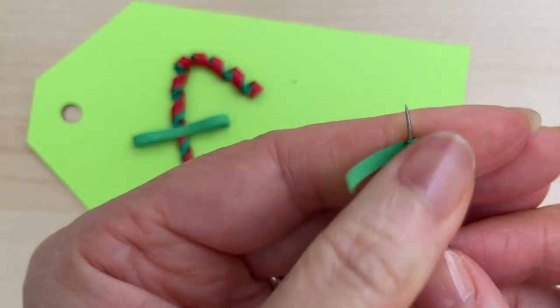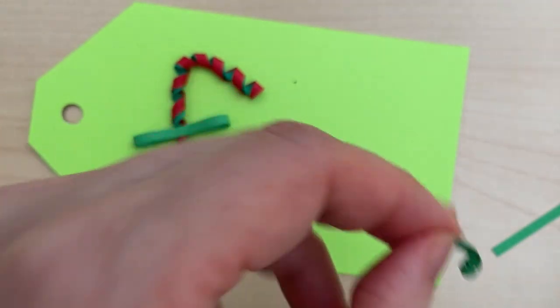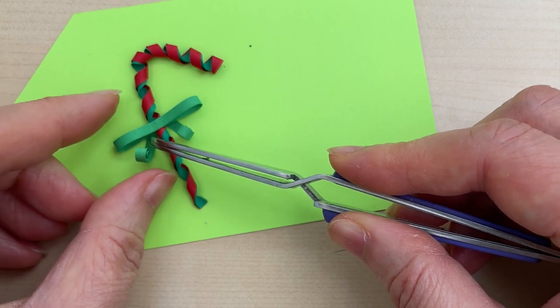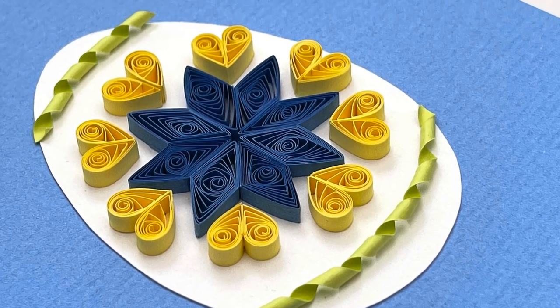And then I've got two strips here that are an inch and a quarter and I'm just going to coil up the ends a bit and there we have it, a simple gift tag. If you enjoyed adding spirals to your quilling projects, then watch this next tutorial.